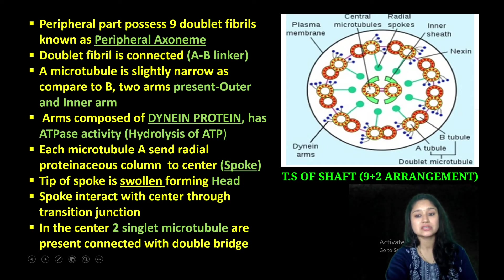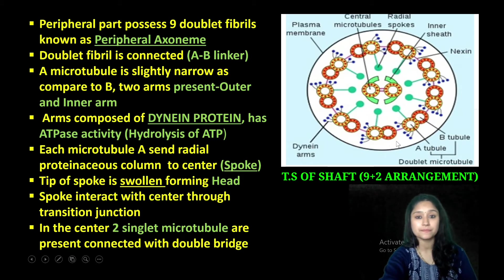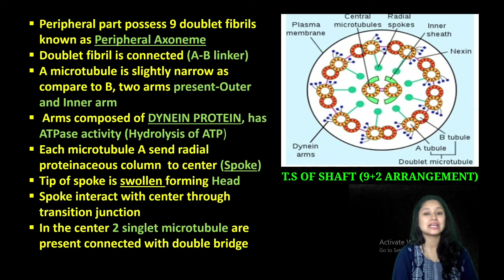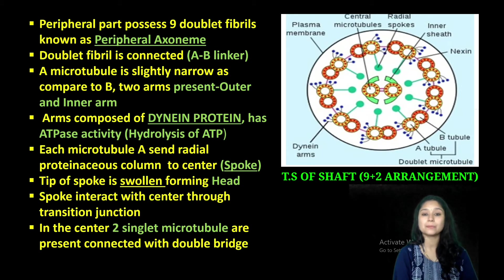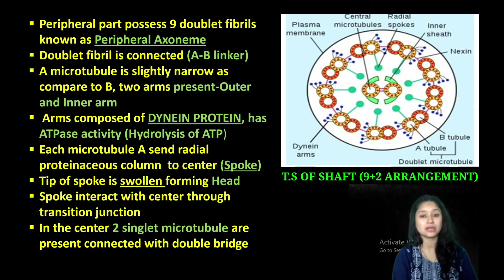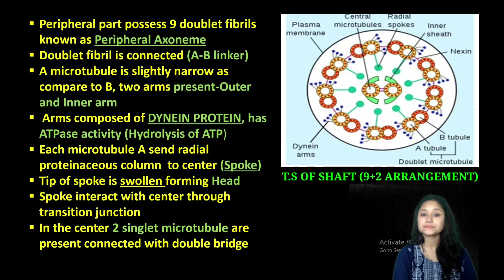Center mein present rahenge do singlet microtubule — two singlet fibrils yahaan pe present hain. And they are going to be connected with each other by a double bridge present between them. Is tarikay se microtubule ki arrangement aap dekh rahe hain shaft mein, ya phir cilia and flagella mein — that is nine on the periphery, nine doublet fibrils on the periphery, and two singlet fibrils at the center. So the condition becomes 9 plus 2 arrangement of microtubule.